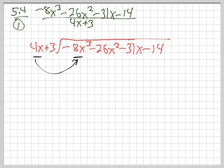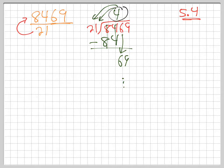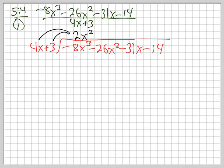Remember how multiplying letter-number things works: out-front numbers multiply, powers add. So what do I put up there? Negative 2x². Because negative 2 times 4 is negative 8, and the invisible 1 power plus the 2 power gives x³. That negative 2x² distributes to both terms — it hits both of them — giving negative 8x³ minus 6x².